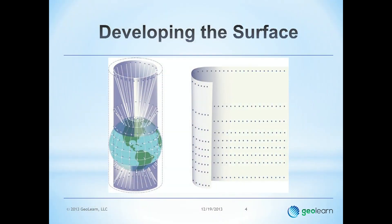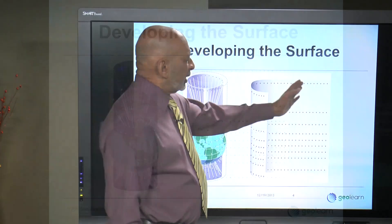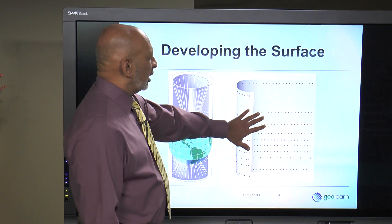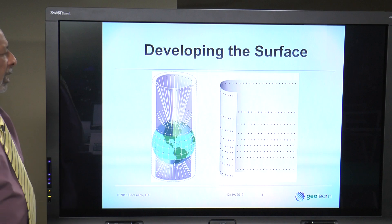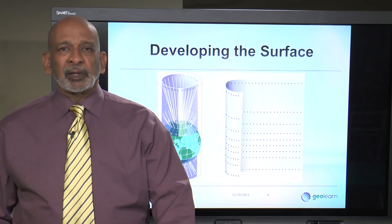We had this diagram in the earlier course, and I'll repeat it here — you'll probably see it many more times. This is the concept of a secant cylinder: the blue cylinder that intersects the surface of the earth so that it is secant. I have a cylinder where we are projecting objects on the surface of the earth to the cylinder, and on the developed cylinder — after it has been slit and laid out flat — you can see the points that have been projected onto it.